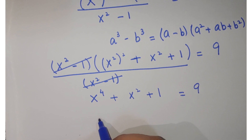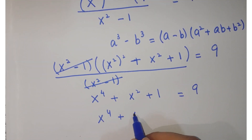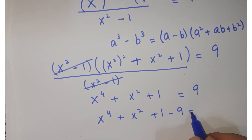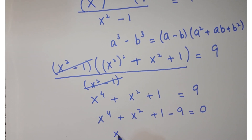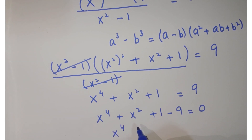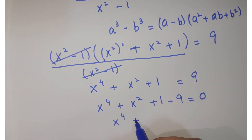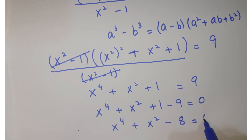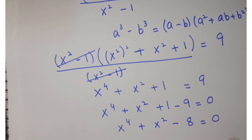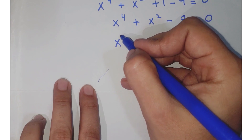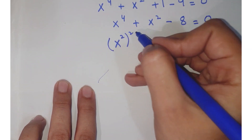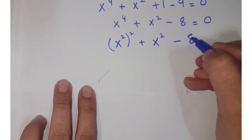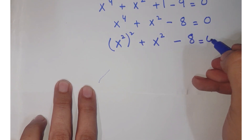So you will get x to the power 4 plus x squared plus 1, equals to 9. Further, you can simplify it as x to the power 4 plus x squared plus 1 minus 9 equals 0, or x to the power 4 plus x squared minus 8 equals 0.